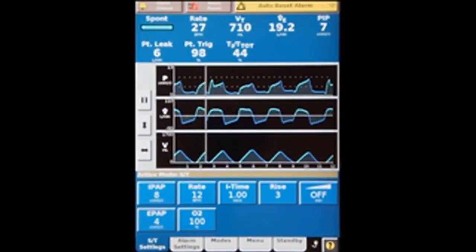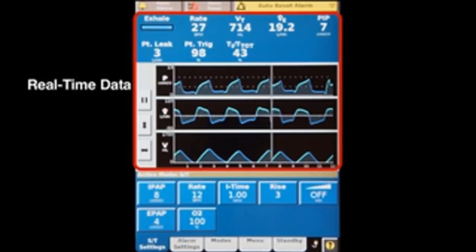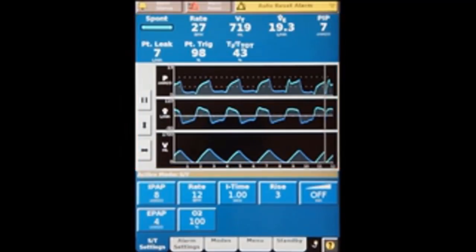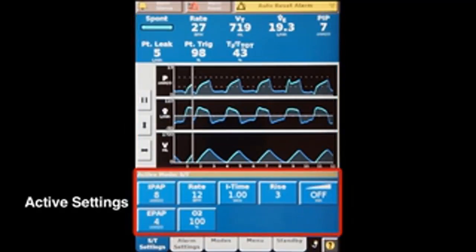This standard ventilator display has two main panels. A top panel conveys real-time information about the patient's breathing in both numeric and graphic formats, while a bottom panel displays the active settings.